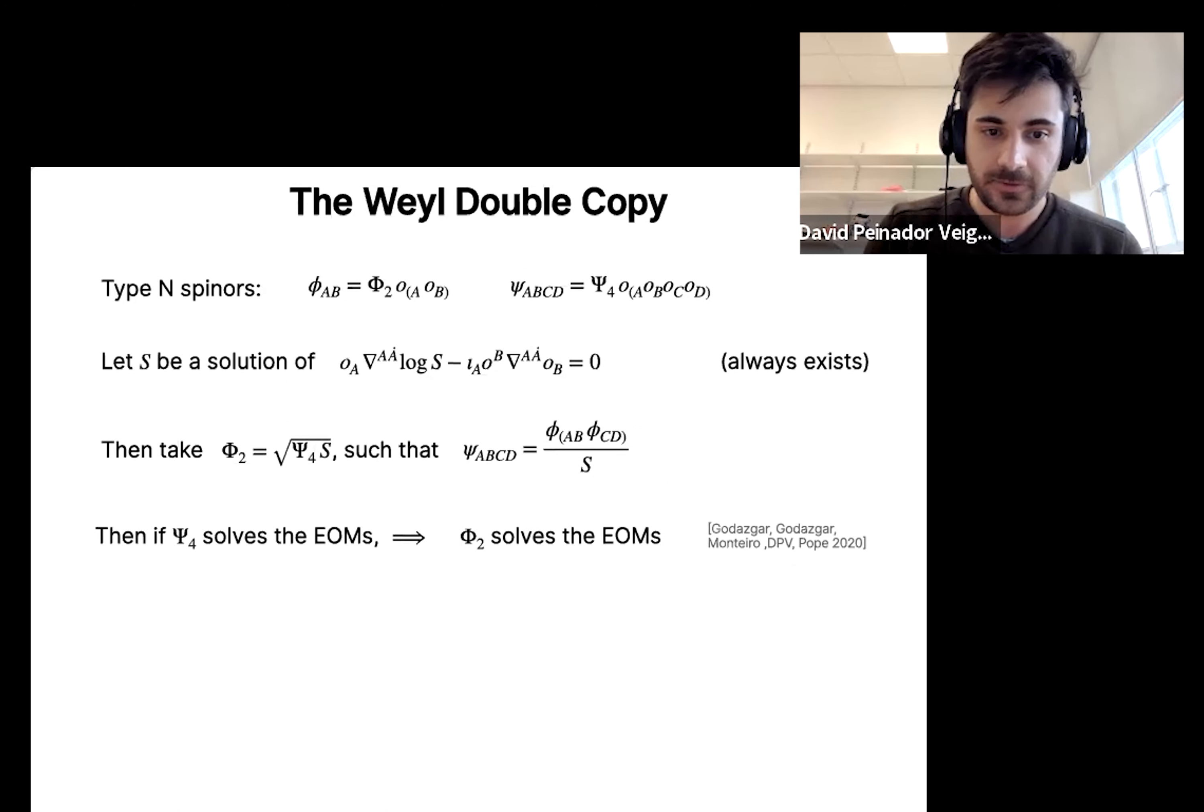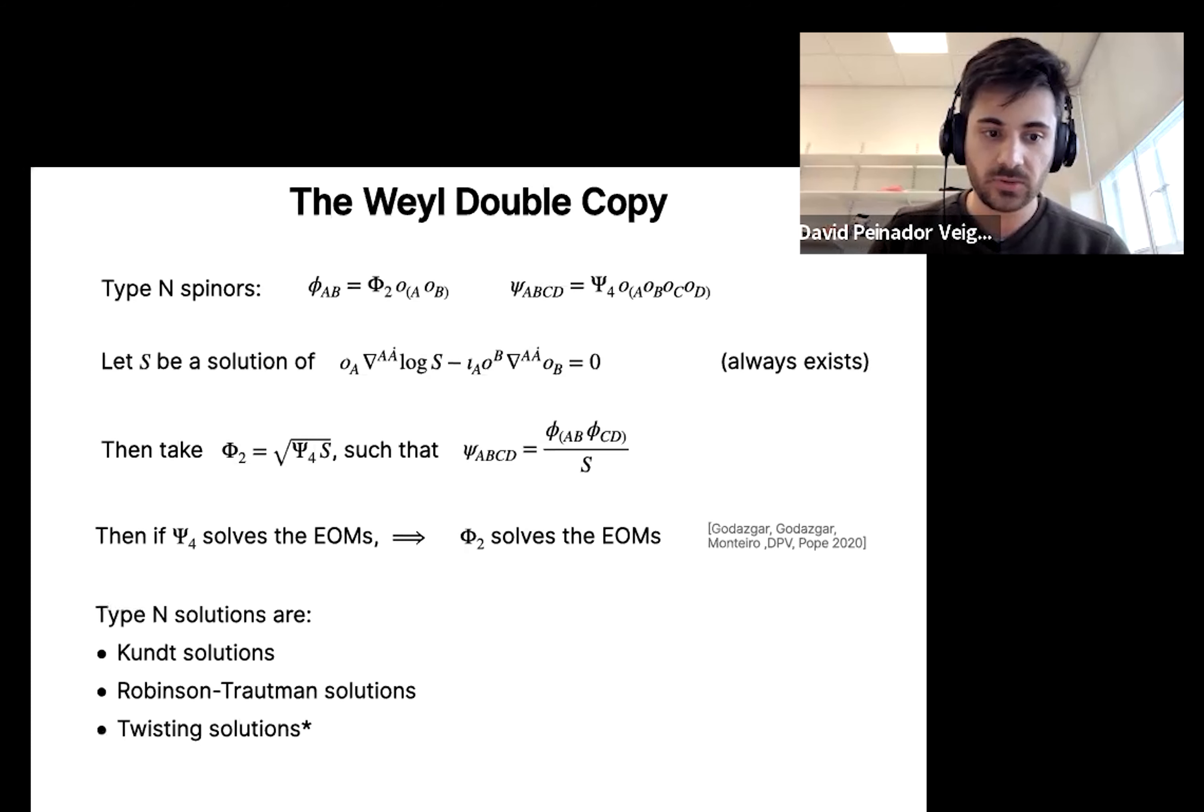And this is very interesting because type N solutions are quite interesting. You have Kerr solutions, Taub-NUT solutions and twisting solutions. They basically correspond to gravitational waves. Also for the twisting solutions, the interpretation as a double copy is a bit subtle. And here, the main difference with respect to type D spacetimes is that now s might have a bit more freedom. You might have some functional degrees of freedom since it is not precisely obtained from ψ_4.